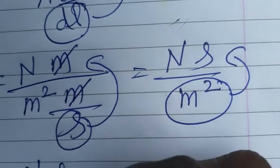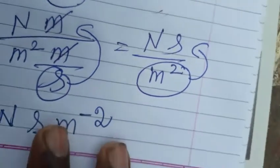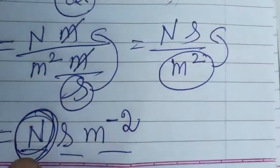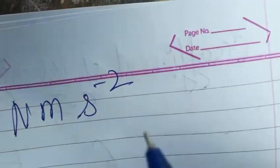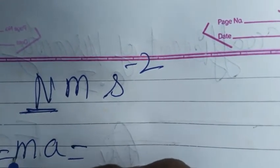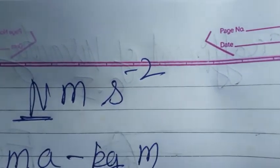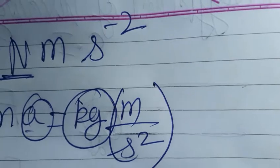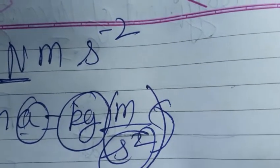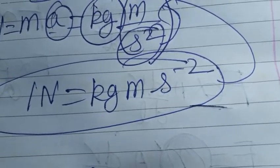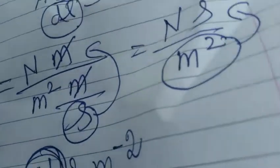So we get Newton·second·meter⁻². Now we expand Newton, since force equals mass times acceleration. One Newton equals kg times meter per second squared, which is kg·m·s⁻². Substituting Newton = kg·m·s⁻² into our expression Newton·second·meter⁻², we get kg·m·s⁻²·s·m⁻².